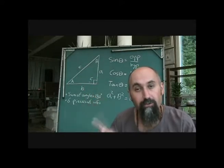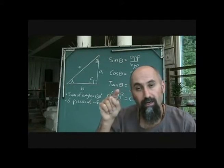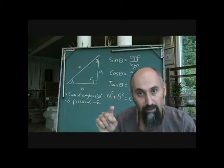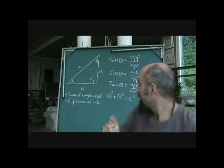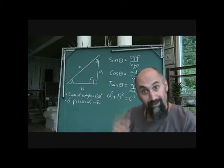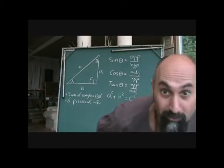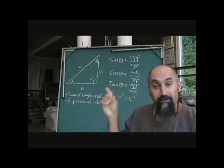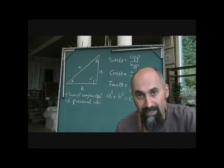The way they usually work with triangles is they use capital letters to represent the angle and lowercase letters to represent the side. There are six pieces of information in a triangle — three angles and three sides.